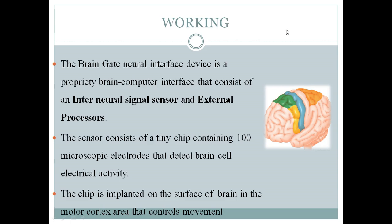The Brain Gate neural interface device is a proprietary brain-computer interface consisting of an inter-neural signal sensor and an external processor. The sensor consists of a tiny chip containing a hundred microscopic electrodes that detect brain cell electrical activity. The chip is implanted on the surface of the brain in the motor cortex area that controls movement, and these electrodes detect the actual brain cell electrical activity.